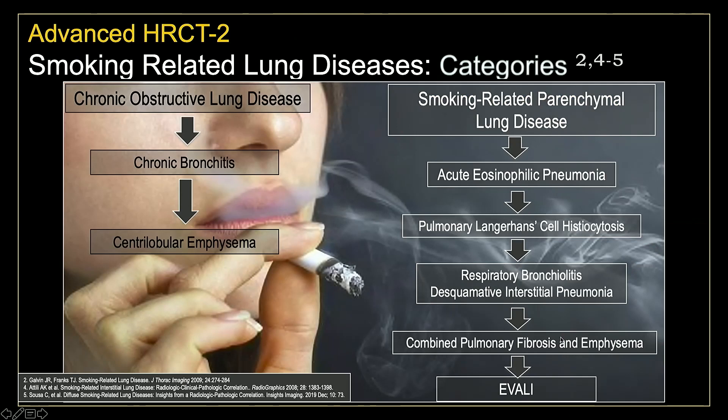Smoke-related lung diseases are broadly characterized into chronic obstructive lung disease, which includes chronic bronchitis and centrilobular emphysema — which we will not discuss — and smoke-related parenchymal lung diseases, which include acute eosinophilic pneumonia, pulmonary Langerhans cell histiocytosis, respiratory bronchiolitis, desquamative interstitial pneumonia, and combined pulmonary fibrosis and emphysema syndrome, as well as EVALI. We're going to focus on these diseases, and keep in mind many of the imaging features may overlap in a given patient, as well as histopathologic features.